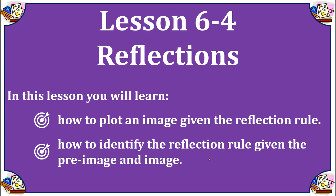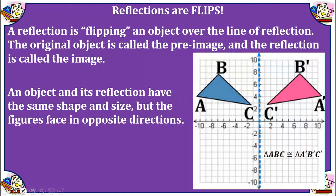In this lesson we're going to learn how to reflect an image across a line of reflection on the coordinate plane. A reflection is a type of transformation in which we flip an object over our line of reflection. The original object is called the pre-image and the new object is the image. When we reflect an object we are just flipping it, and we still have a congruent shape — therefore a reflection is a type of rigid transformation. In this example, the blue triangle is the pre-image and the pink triangle is the image. We can see the primes that indicate this object has been transformed.